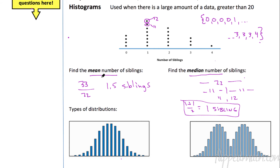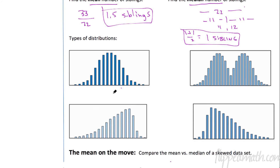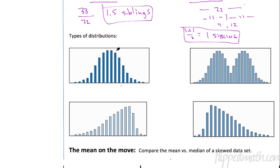Now let's talk about the different shapes of distributions. A normal distribution, also called a bell curve, looks like a bell. You have an equal number on the left-hand side and the right-hand side, with most of the data in the middle and a few on each end. That's called a symmetric distribution — symmetric means one half is a mirror image of the other side.